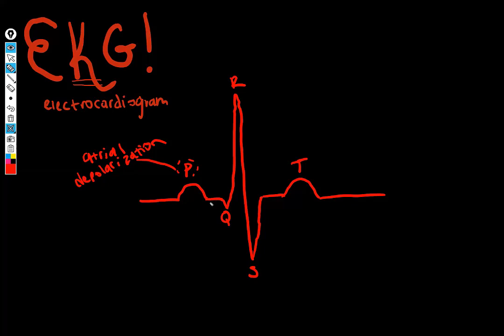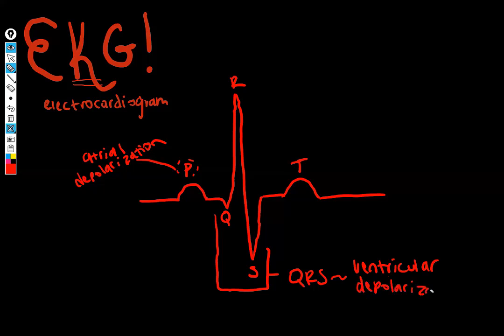So the QRS complex, as you can see, is really tall. And that reflects the conduction of electricity through the ventricles during ventricular depolarization. And then the T corresponds to ventricular repolarization.